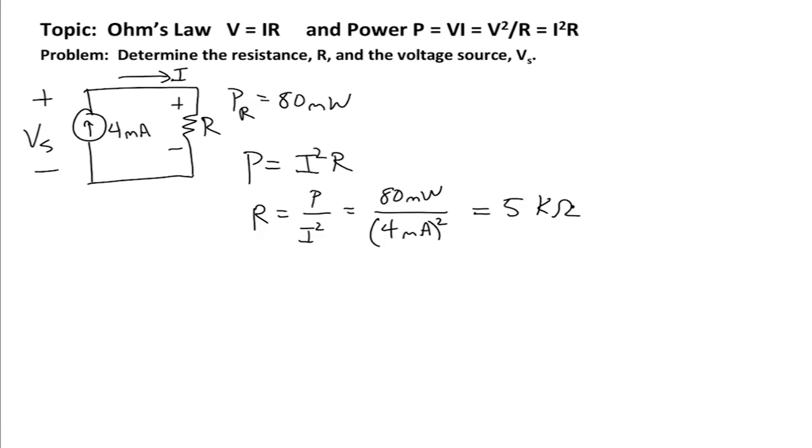So the voltage V sub s is going to be equal to the current times the resistance. And so the current is 4 milliamps.